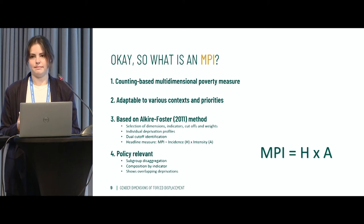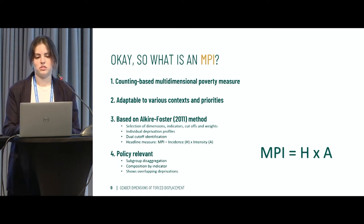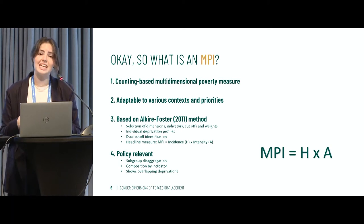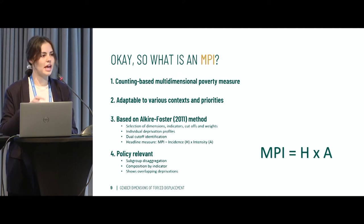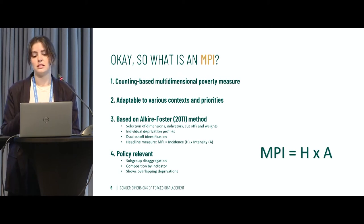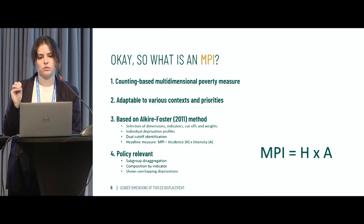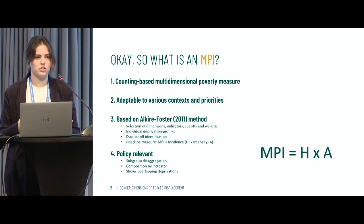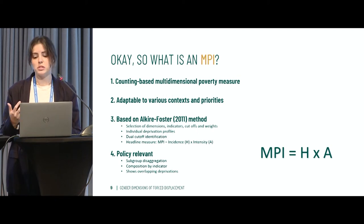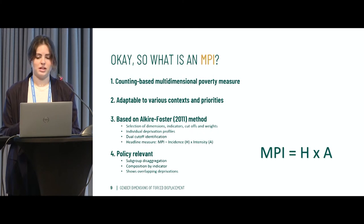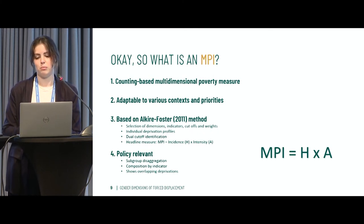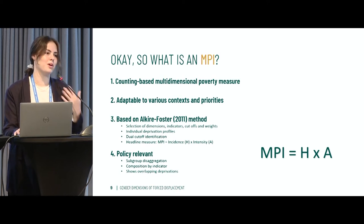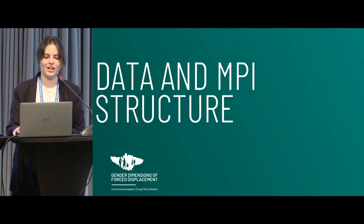What is an MPI? It's a counting-based multidimensional poverty measure. There are three key statistics that characterize every index. The MPI is the product of H — the incidence, or the headcount ratio, meaning the proportion of the population who are multidimensionally poor — multiplied by the intensity, or A, which is the average share of the weighted indicators in which multidimensionally poor people are deprived.